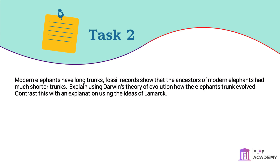This means in the following generation, more elephants would have a long trunk, as the characteristic would have been passed on more often from the long-trunked parents. This would have repeated over many subsequent generations until all of the short-trunked elephants died out and only long-trunked elephants remained.